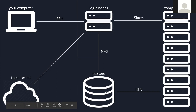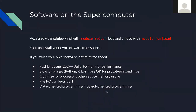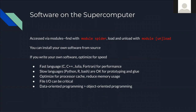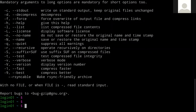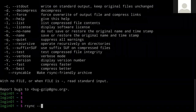Now let's talk about how to use software on the supercomputer. Most basic Unix software you would expect is available by default — you don't need to load any modules to access normal commands. If I want to use something like gzip, I can just run the command. This is true for most common things like rsync.